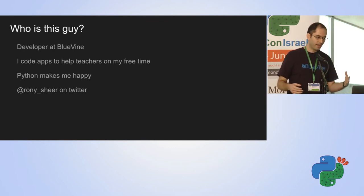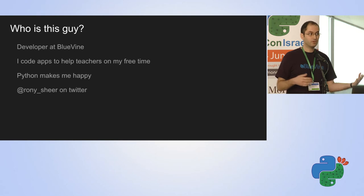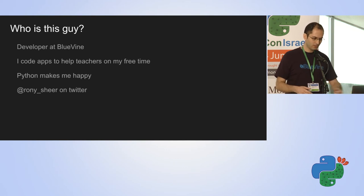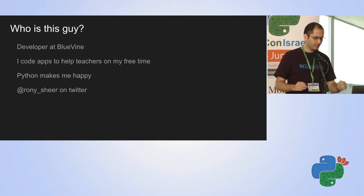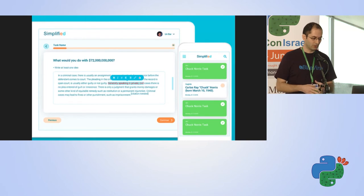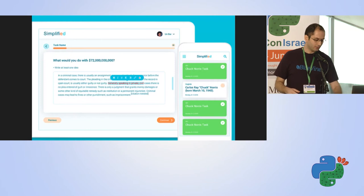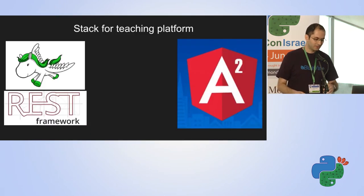My name is Ronnie Scher, I'm a developer at Bluevine — a fintech company that is hiring, so come see us at our stand. On my free time I code apps to make teachers' lives easier. I encountered the problem of real-time apps when creating a micro-framework for content delivery for teachers, where the idea is that a teacher should know where a student is in a particular task without going to students based on their biases.